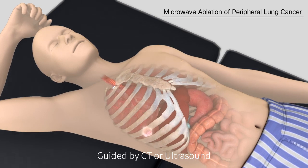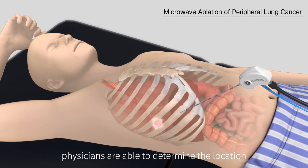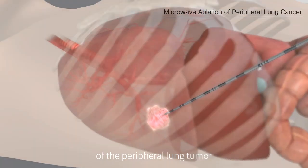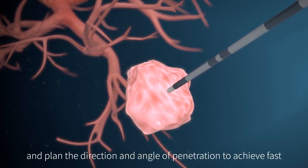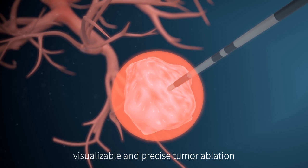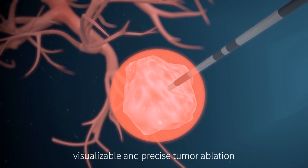Guided by CT or ultrasound, physicians are able to determine the location of the peripheral lung tumor and plan the direction and angle of penetration to achieve fast, visualizable, and precise tumor ablation.